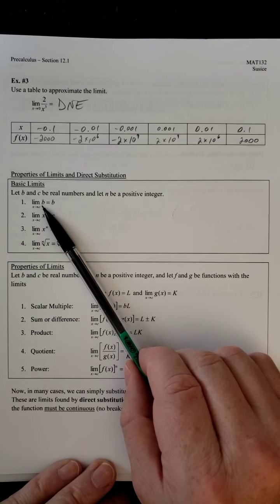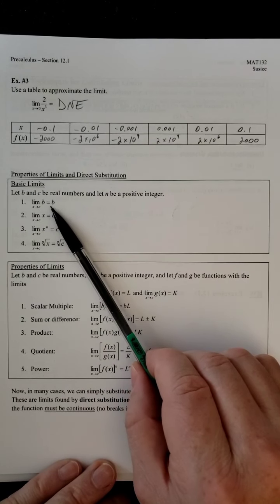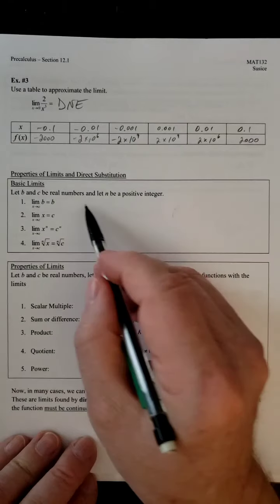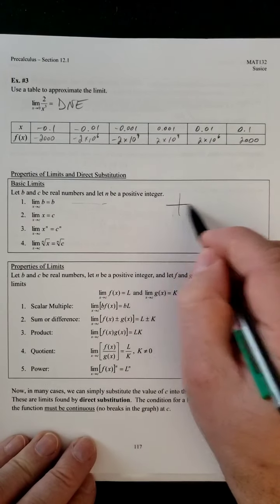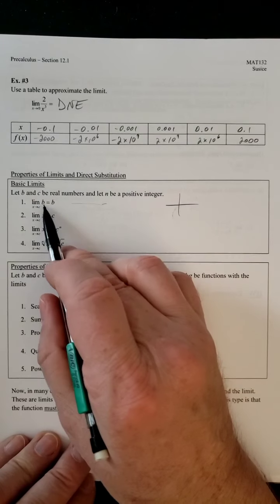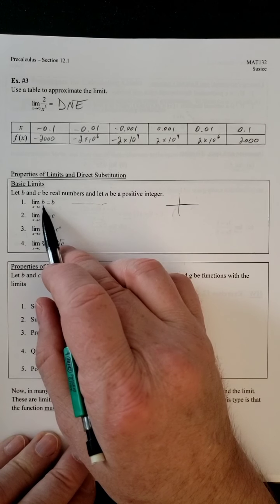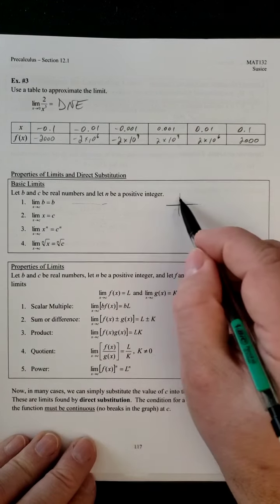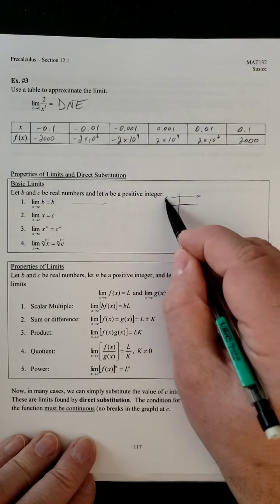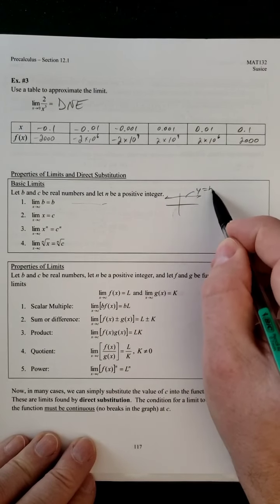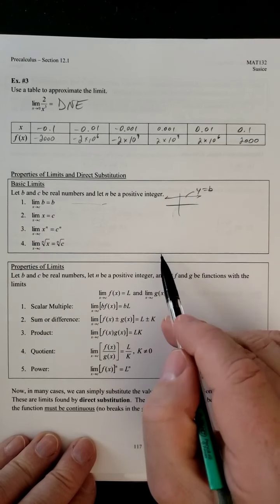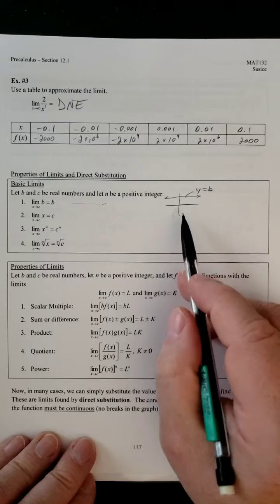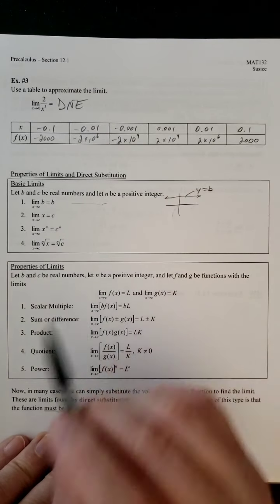If we have the limit of b as x approaches c, that limit should be equal to b. And the reason why is because what does that function look like? b is a constant. So, if you have y equals b, that's going to be a horizontal line. So, no matter what value of x you're approaching, it's always at that same value of b. So, that's why that limit is the way it is.